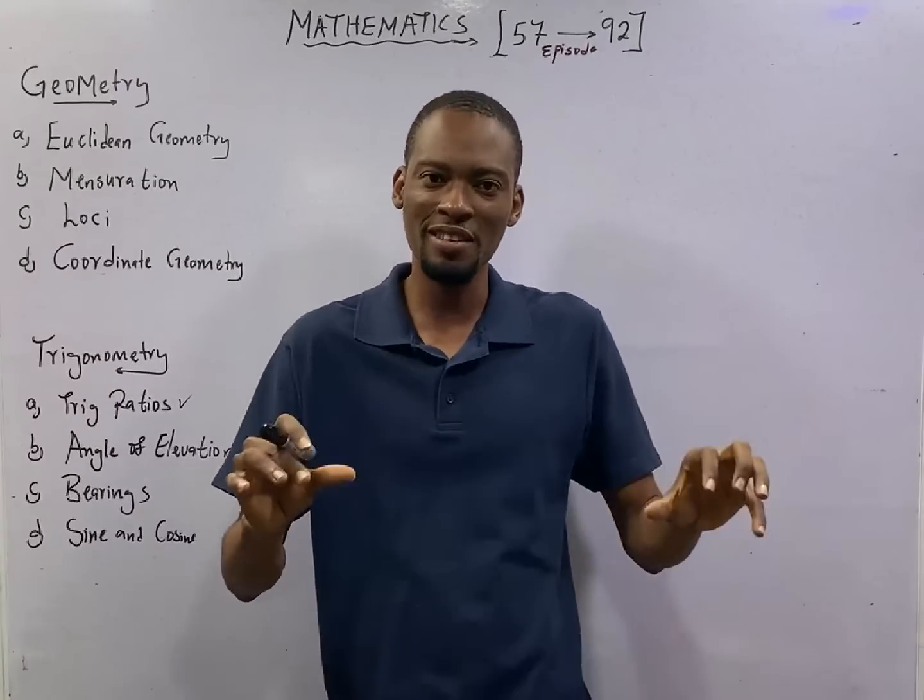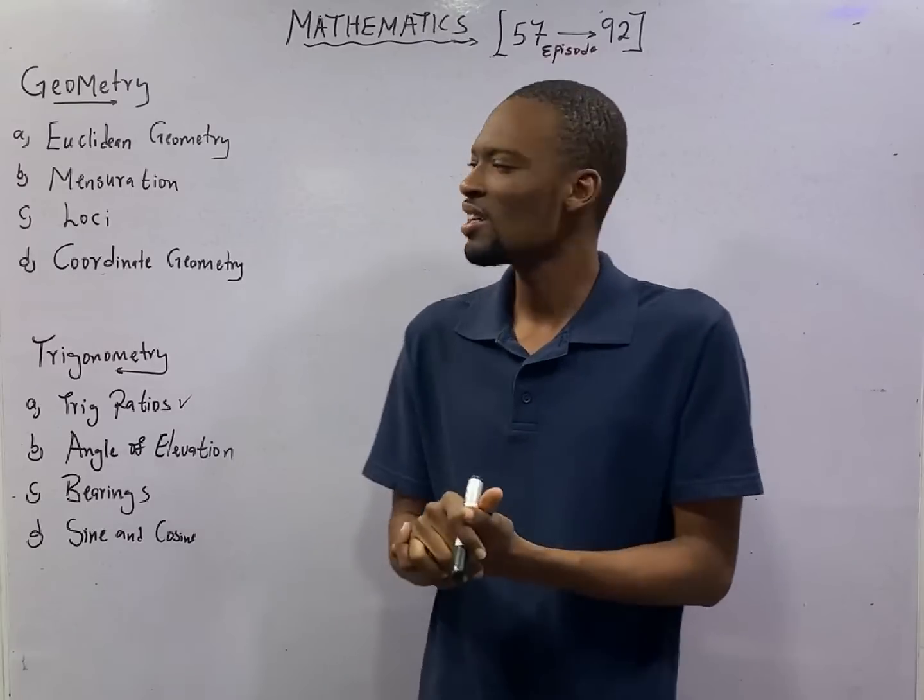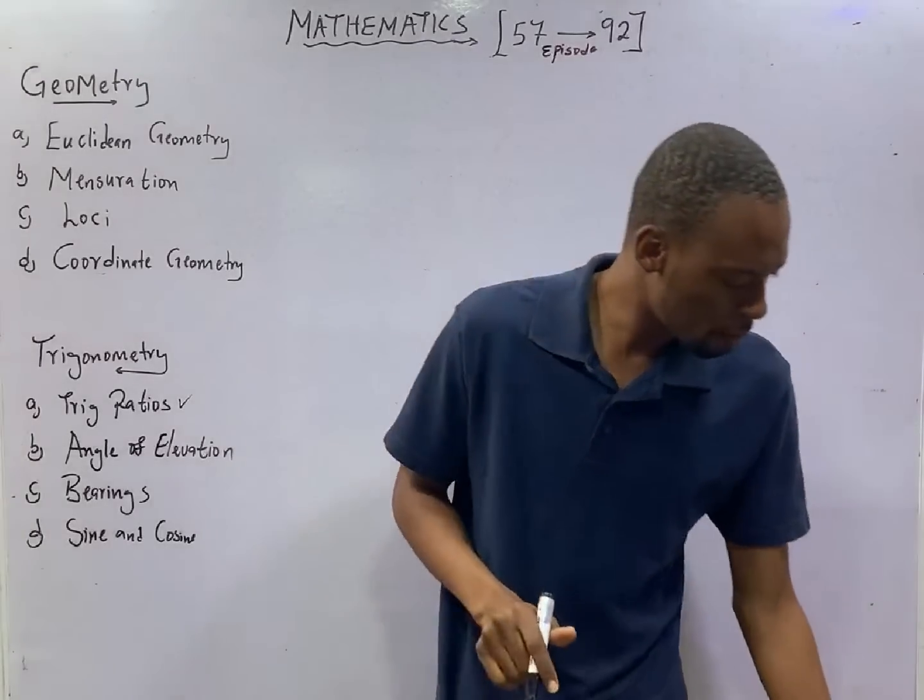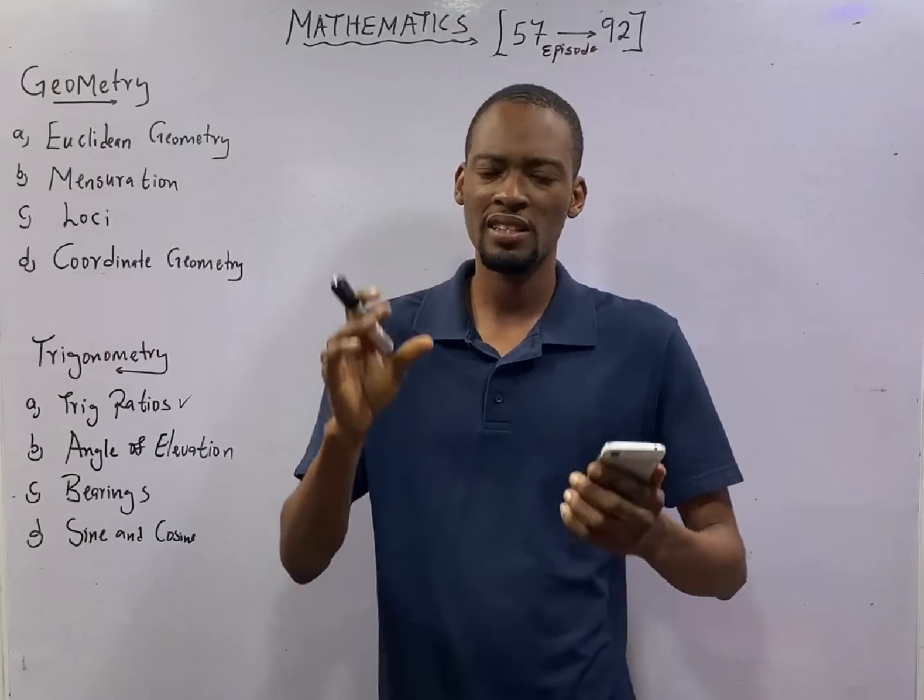This is episode number 67 of the 120 Days to JAMB Mathematics with Flash Isaac. In this episode, we shall be looking at the following questions from the Flash Letters JAMB application.